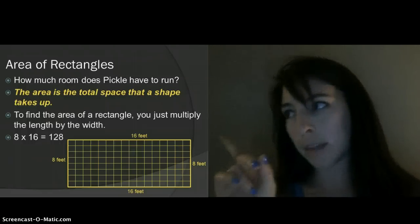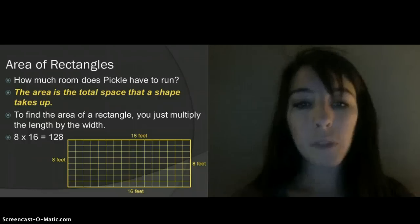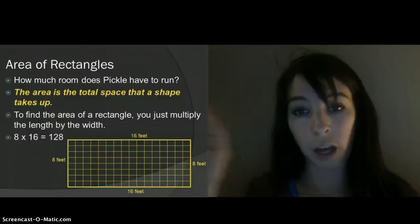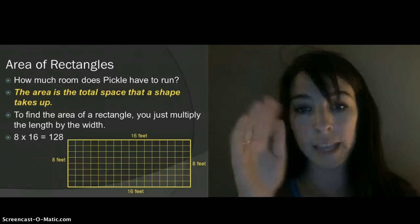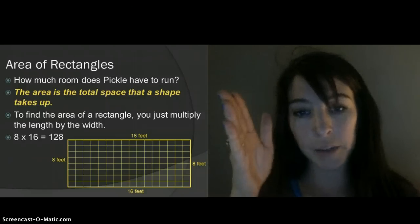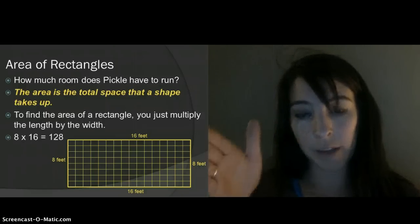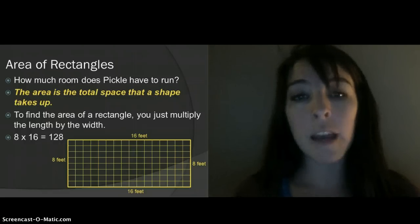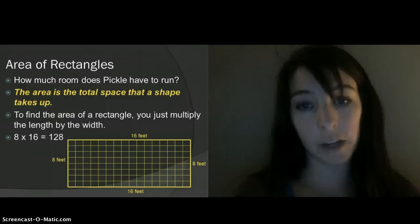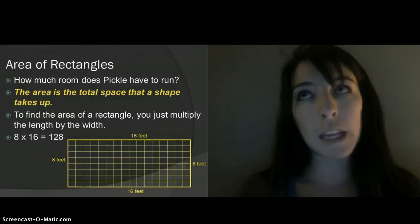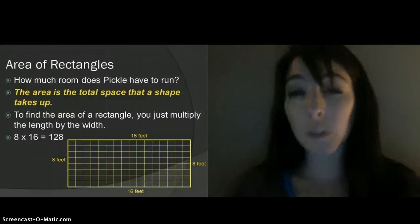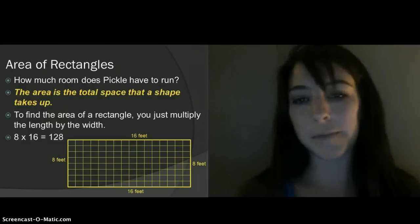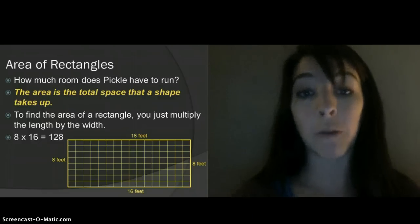And if you look at the picture on the PowerPoint, you'll see that there's 16 squares going along the space, and there's 8 squares that go up and down the space. And if you add them all up — you're more than welcome to pause the video and count them — it comes out to 128 squares total. So we were really giving Pickle 128 square feet to run around this space that had a perimeter of 48 feet.